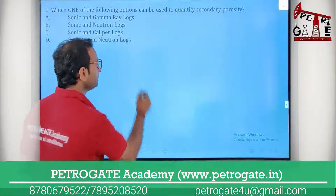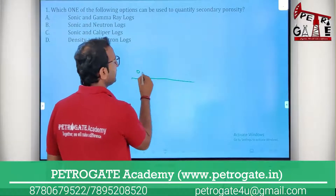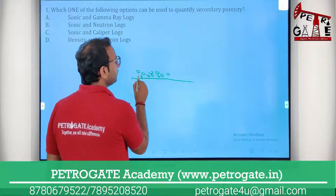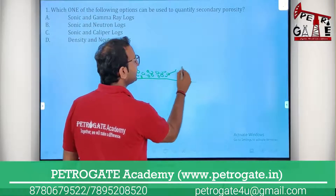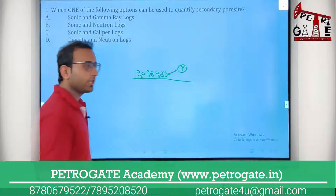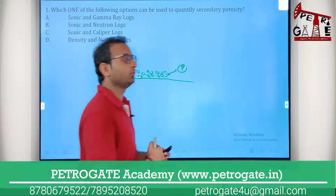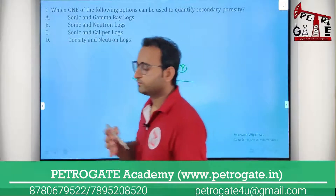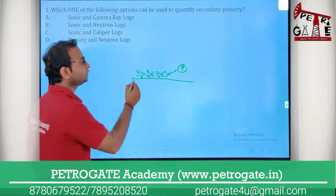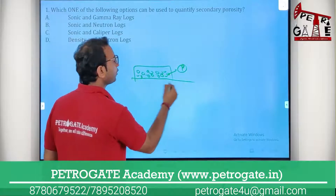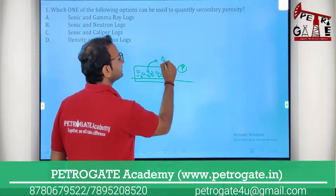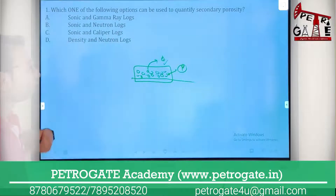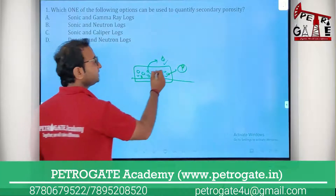When you deposit grains, the porosity formed at the time of deposition is your primary porosity. But after that, due to tectonic activity, dissolution, erosion, or weathering, you see some porosity variation — that is called secondary porosity.